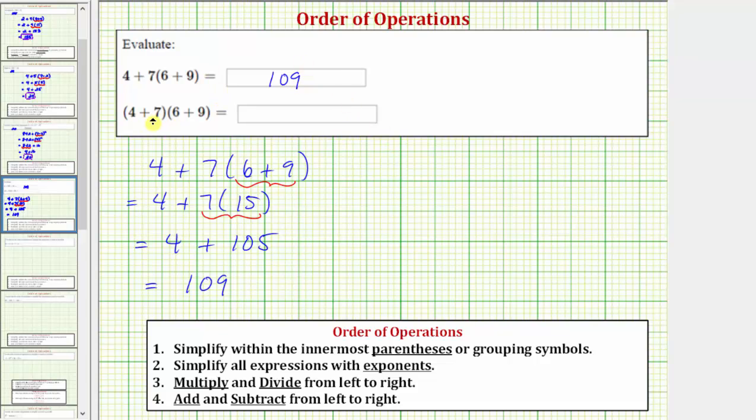Now let's evaluate or simplify the next expression, and then we'll verify both on the graphing calculator. For our next expression, we have the quantity four plus seven times the quantity six plus nine. So again, following the order of operations, the first step is to simplify inside the parentheses. So we simplify inside these parentheses, as well as inside these parentheses.